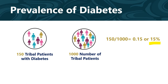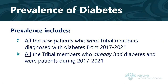You write in your strategic plan that the prevalence of diabetes among tribal members who were patients at the clinic was 15% during 2017 to 2021. This number was calculated by taking the total number of all tribal patients with diabetes from 2017 to 2021 — which was 150 — divided by the total number of tribal patients from 2017 to 2021, which was 1,000. This 15% includes all new tribal patients diagnosed with diabetes from 2017 through 2021, as well as all tribal members who already had diabetes and were patients during that period. Now you know where to focus your energy and efforts.